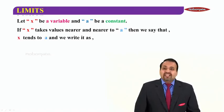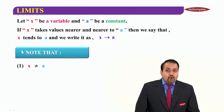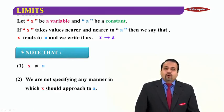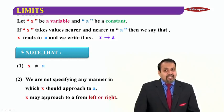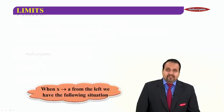If X takes the value nearer and nearer to A, then we say that X tends to A and we write it as X arrow mark and A. We read it as X tending to A. Note that in this case, X cannot be equal to A and we are not specifying any manner in which X should approach A. That means, it can approach to A from left as well as it can approach from right.